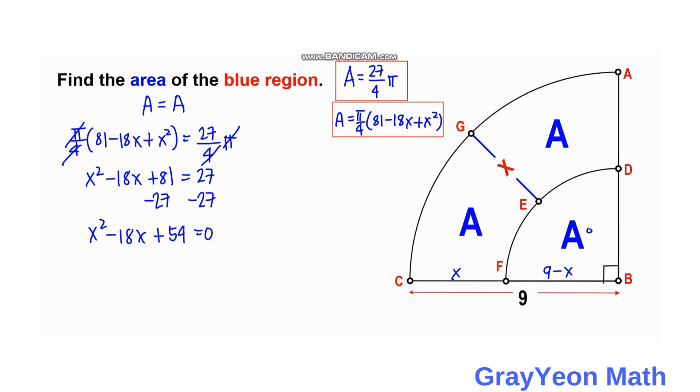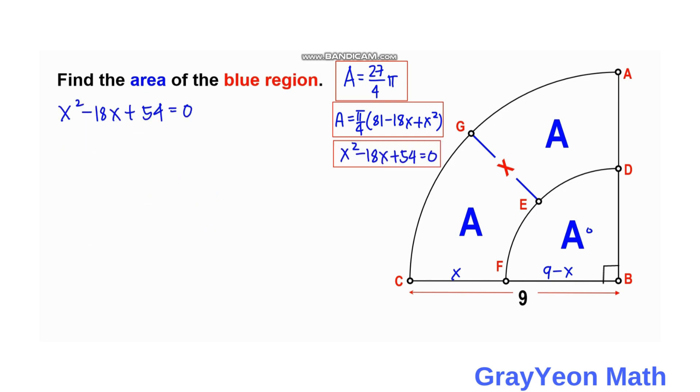And we are left with X squared minus 18X plus 54 equals 0. And we are going to solve this resulting quadratic equation by completing the square.